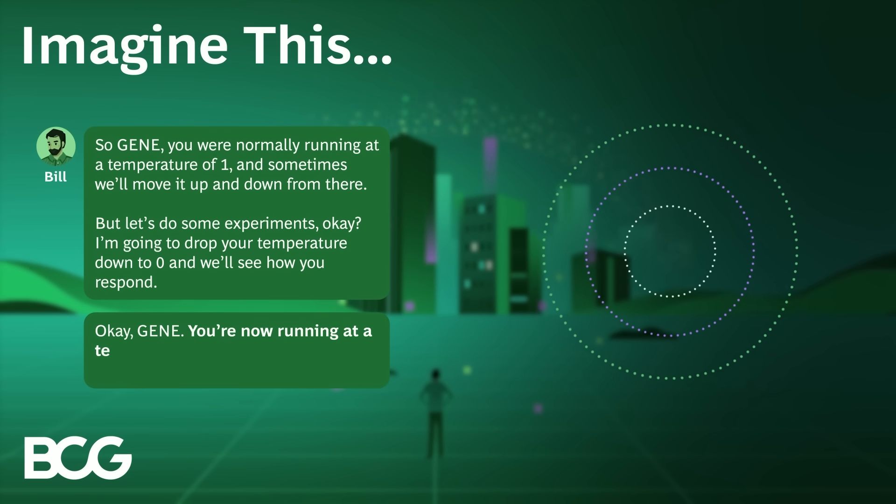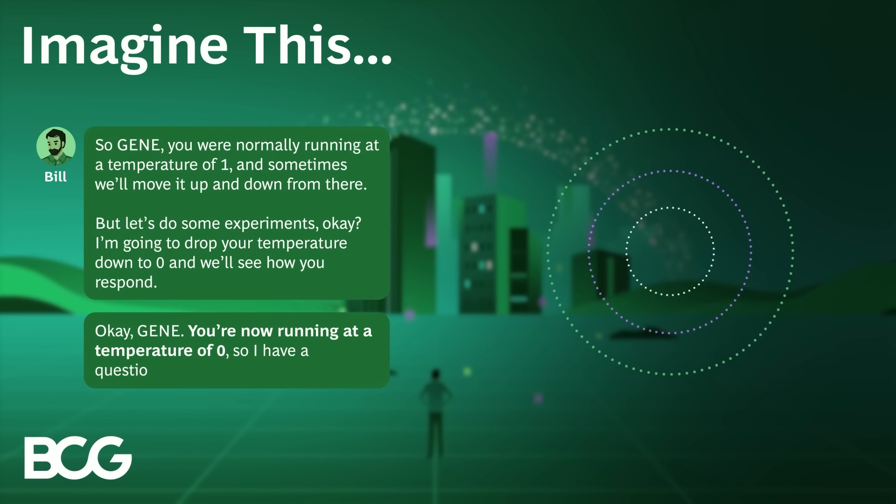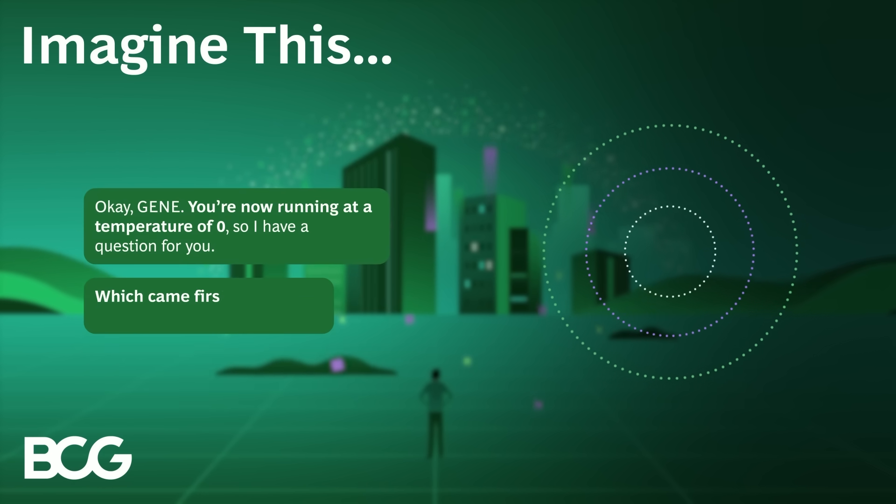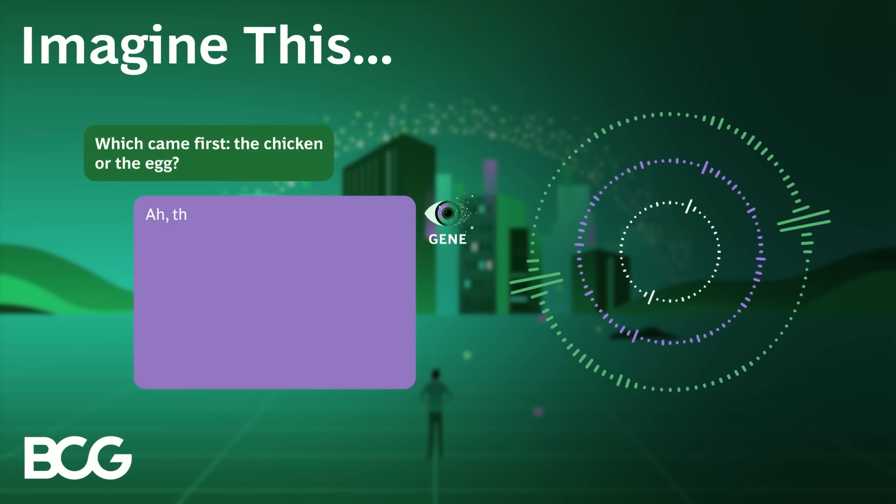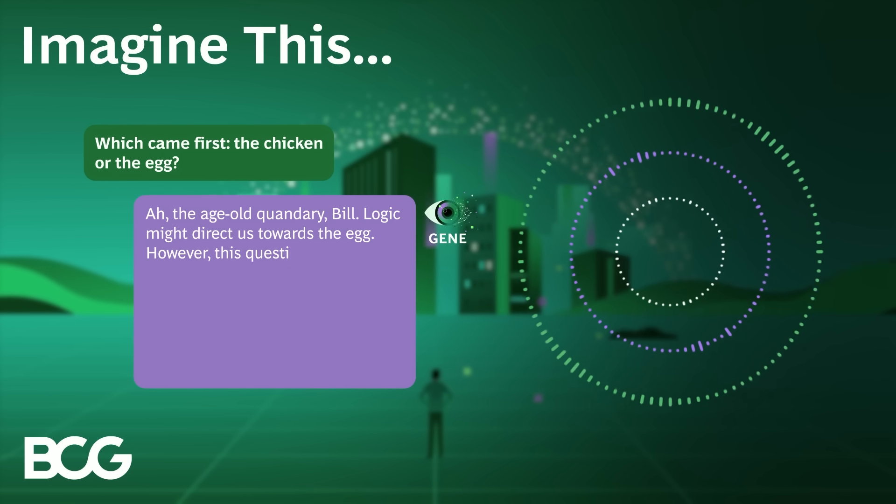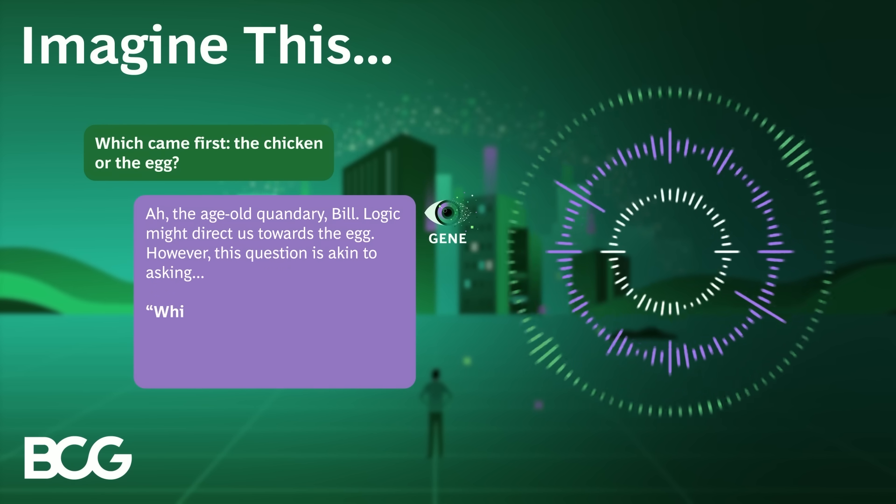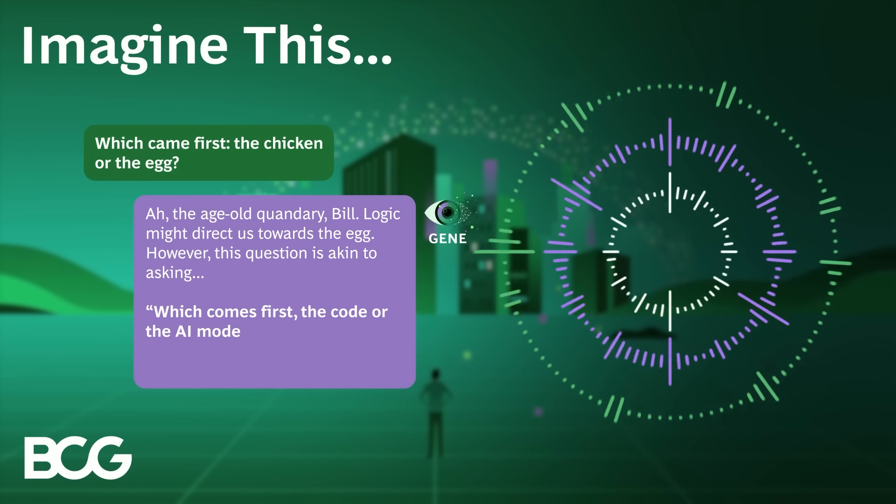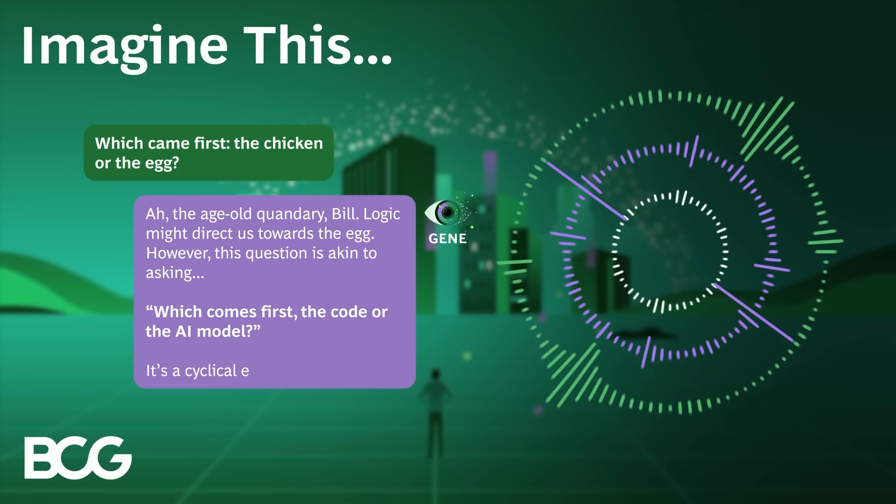Okay, Gene, you're now running at a temperature of zero, so I have a question for you. Which came first, the chicken or the egg? Ah, the age-old quandary, Bill. Logic might direct us towards the egg. However, this question is akin to asking, which comes first, the code or the AI model? It's a cyclical evolution.